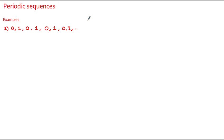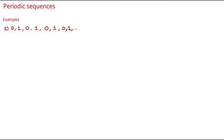So what exactly is a periodic sequence? Well, the definition of a periodic sequence is a number sequence that has a repeating pattern. Here's one example: 0, 1, 0, 1, 0, 1, and so on. As we can see, after the numbers 0 and 1, the sequence repeats itself again: 0, 1, 0, 1.